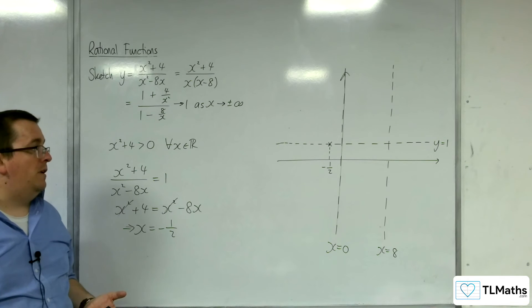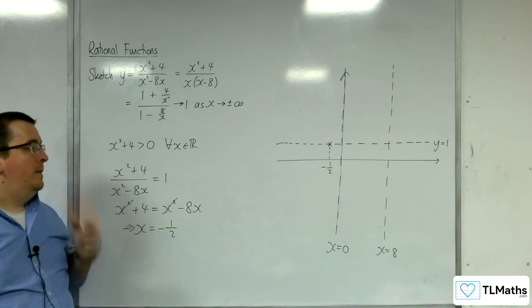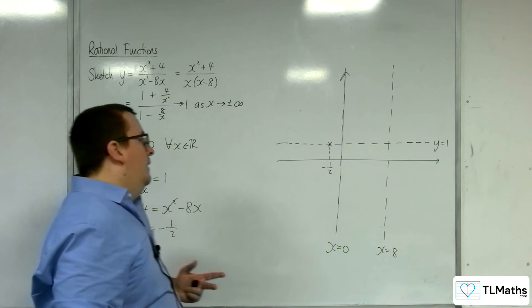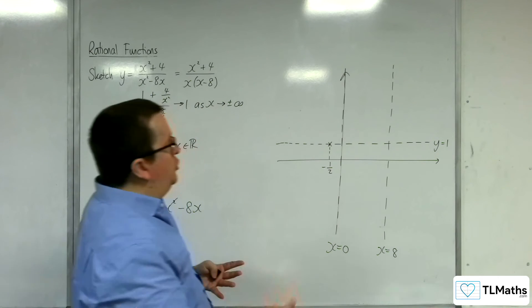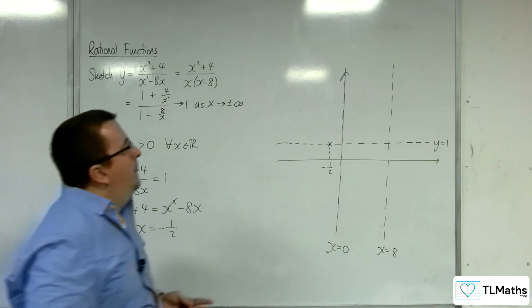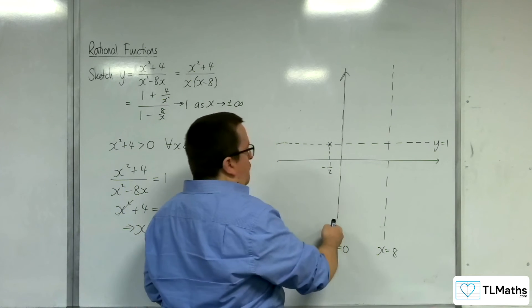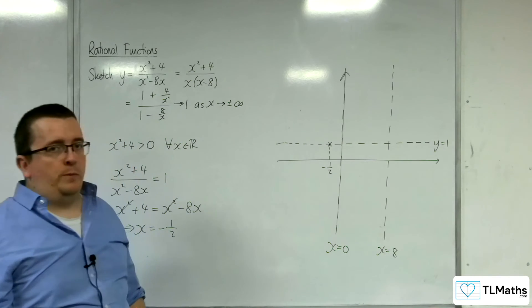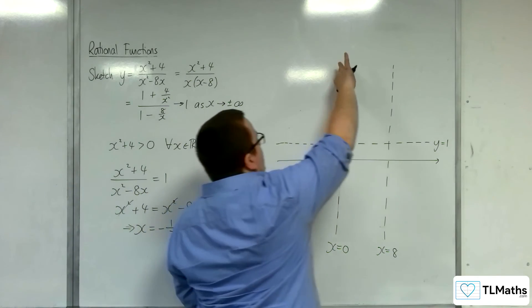So what does this graph look like? Well, it doesn't look like we have much to go on. But with a little bit of logic from what we found, we can't be coming up from this direction, otherwise we'd cross the x-axis. There are no points of intersection with the x-axis, so we've got to be coming down this way.